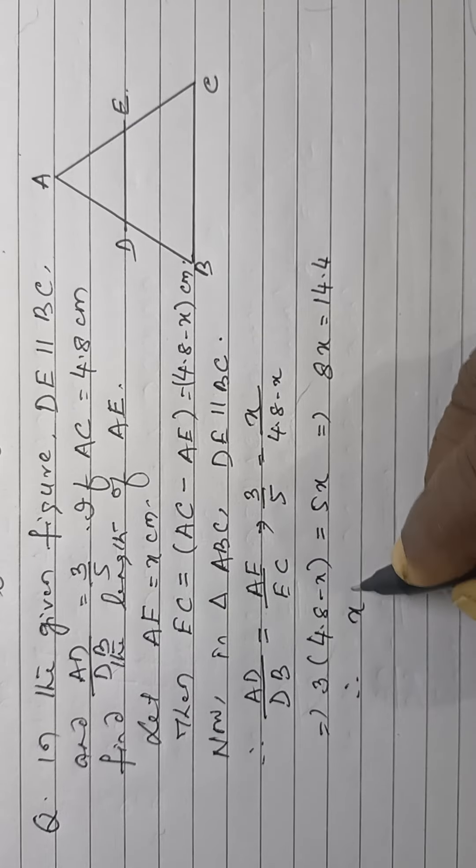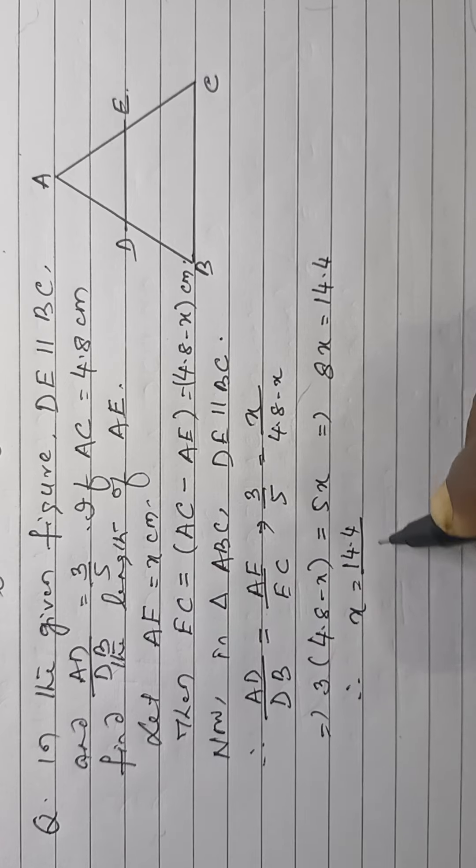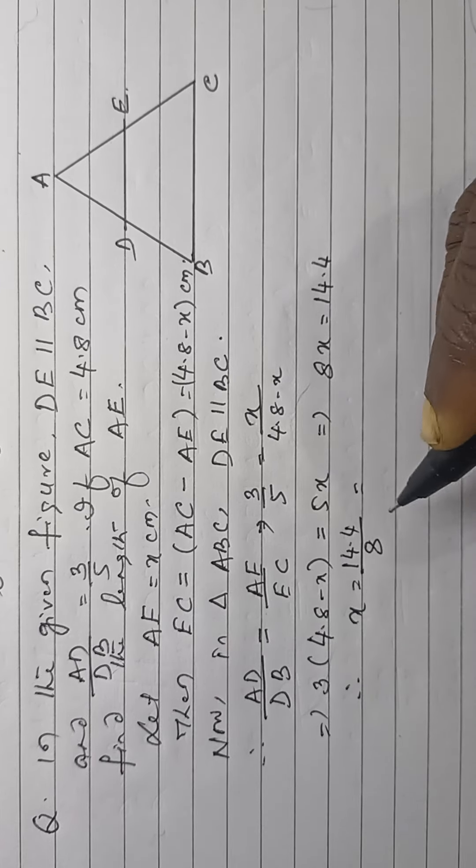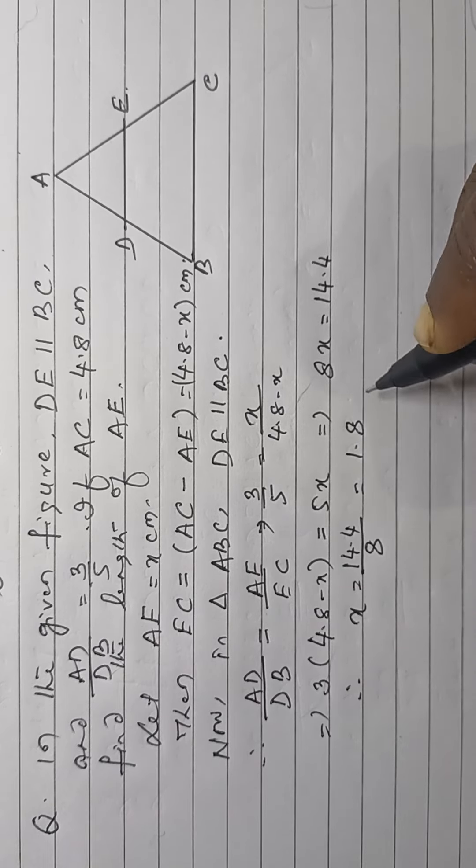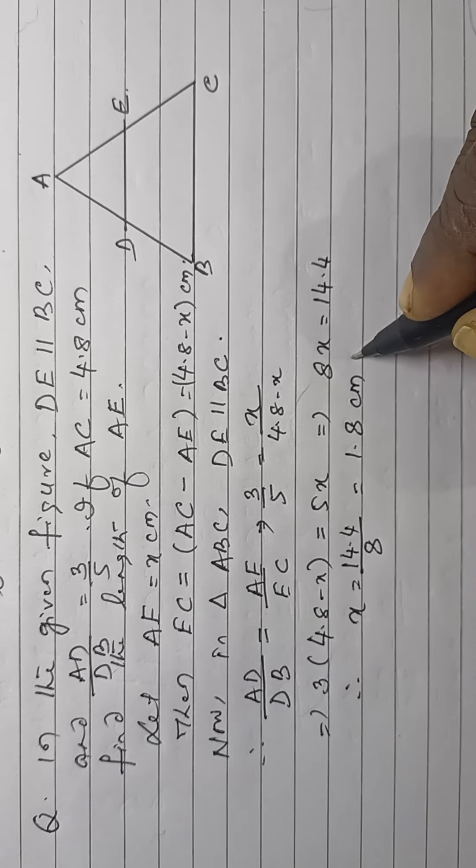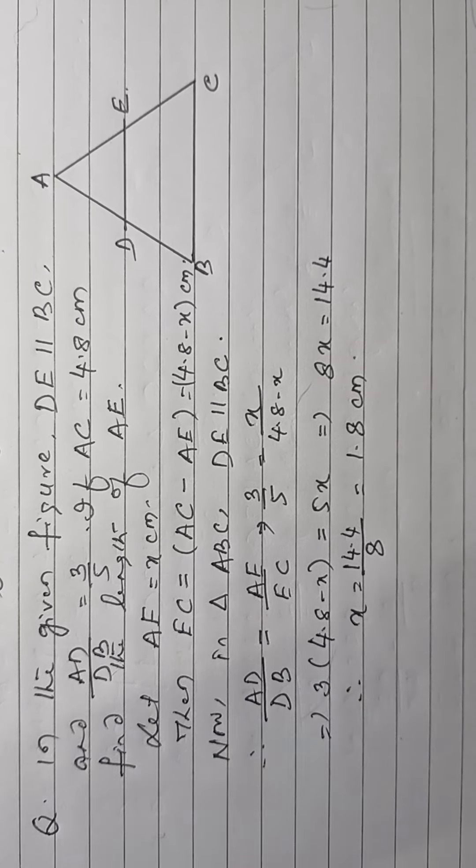Now, X is equal to 14.4 divided by 8. That is 1.8 centimetre, the AE. Then, this is 1.9 centimetre, the AE. Then, this is 1.5 centimetre. Thank you.